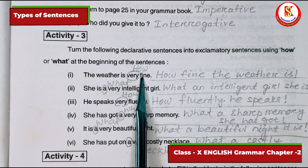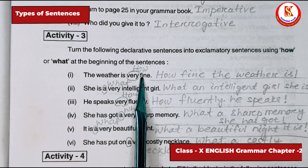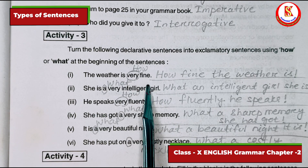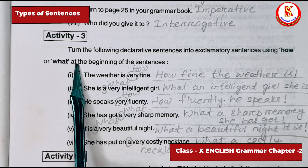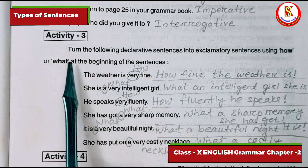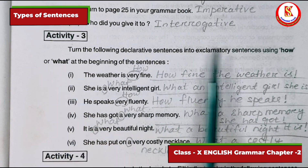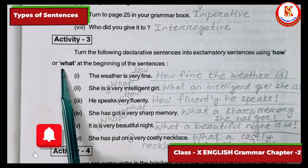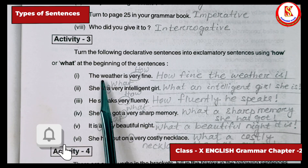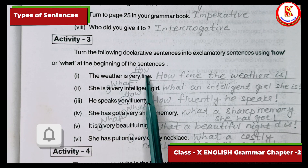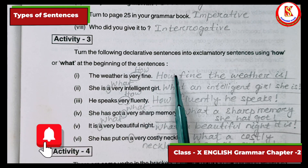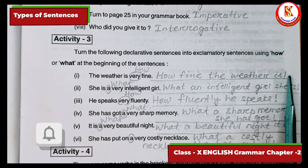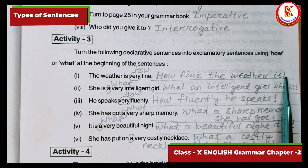In activity three, we have to convert sentences into exclamatory sentences. To make an exclamatory sentence, you use 'how' or 'what'. If there is 'very' in the sentence, use 'how'; otherwise use 'what'. For example: 'The weather is very fine' — since 'very' is present, use 'how': 'How fine the weather is!' with an exclamation symbol at the end.